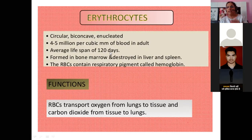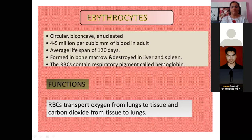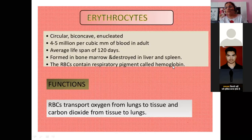The average lifespan of RBC is 120 days. Once formed, the RBC stays in your blood for 120 days, after which it will be denatured and destroyed. RBCs are formed in the bone marrow and destroyed in the liver and spleen.